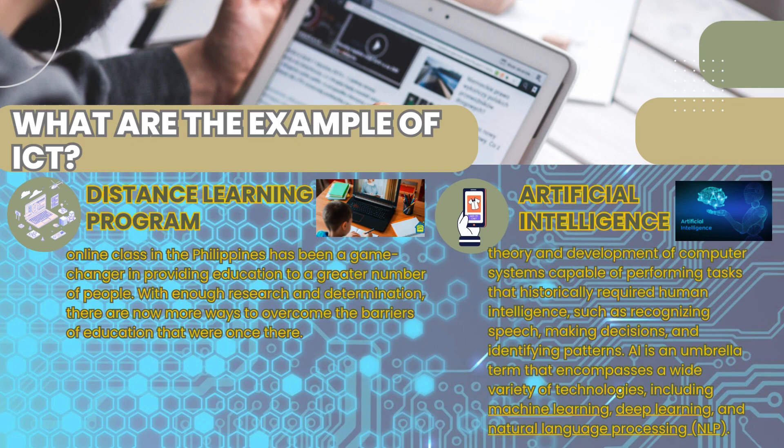Another example is artificial intelligence — the theory and development of computer systems capable of performing tasks that historically required human intelligence, such as recognizing speech, making decisions, and identifying patterns. AI is an umbrella term that encompasses a wide variety of technologies including machine learning, deep learning, and natural language processing.